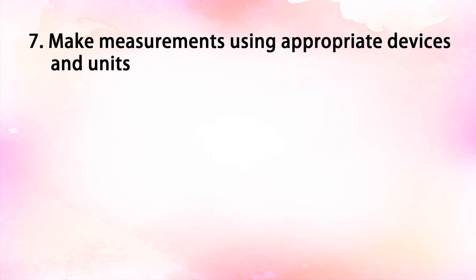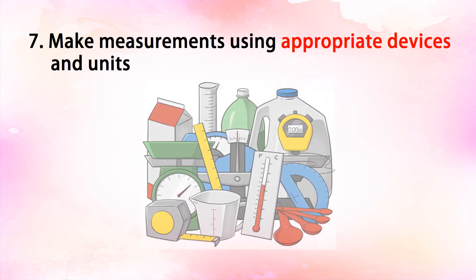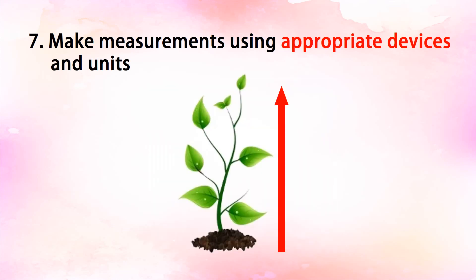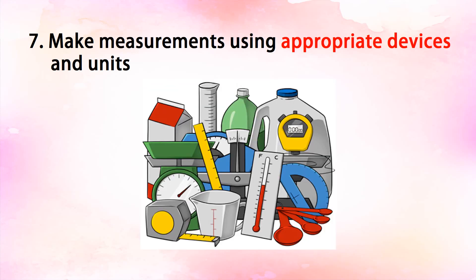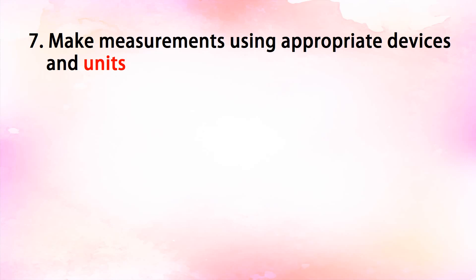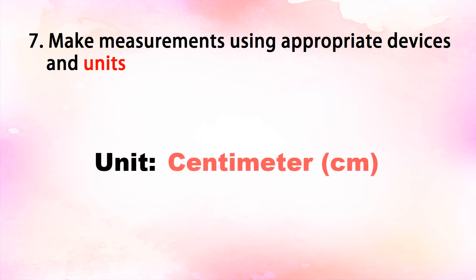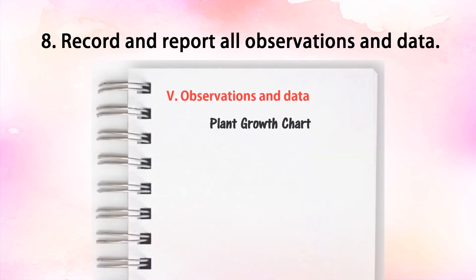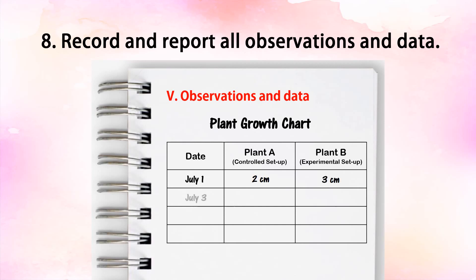The number seven component is to make measurements using appropriate devices and units. Choose an appropriate device from the measuring devices. Since you will measure the length of the plant's growth, you can use a tape measure or ruler. You will also choose the appropriate unit — in this experiment, the appropriate unit is centimeter. The number eight component is to record and report all observations and data. You can make a chart to record the measurement of plant growth over a certain period of time.